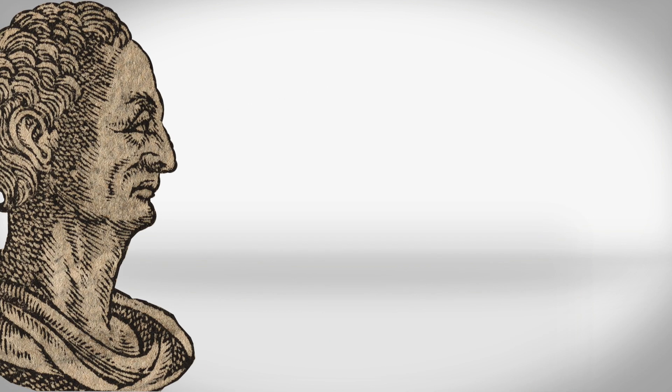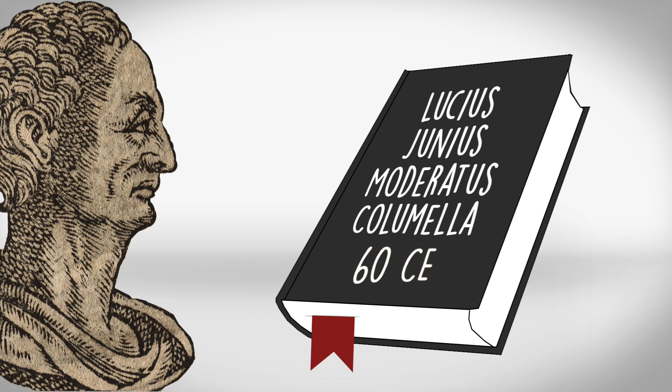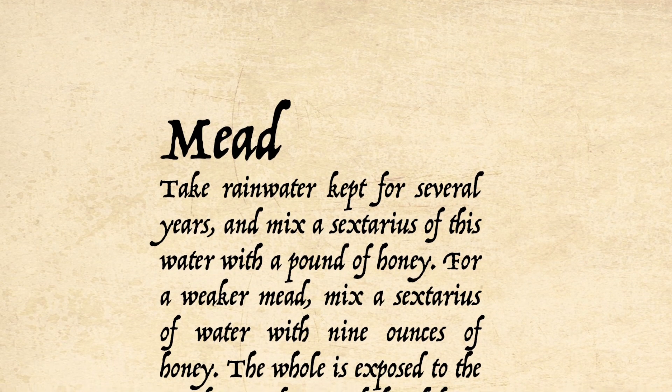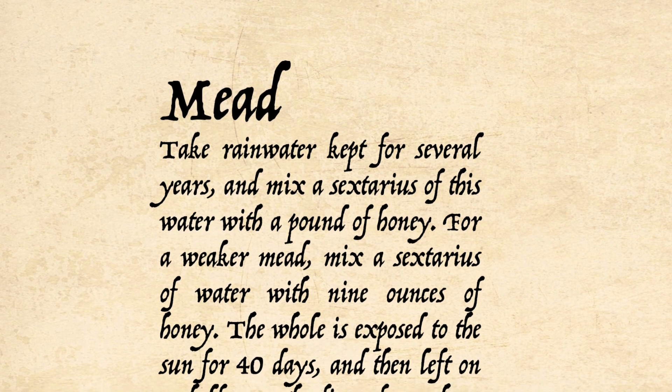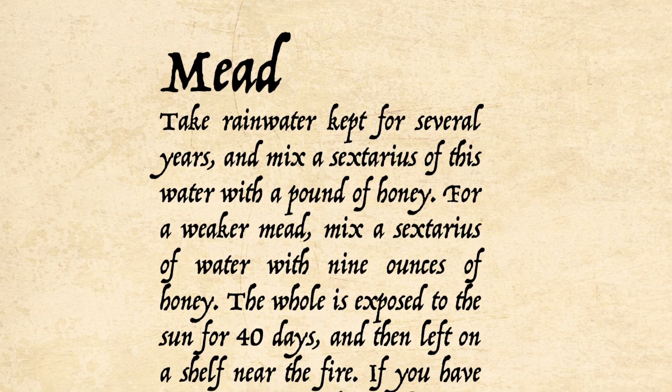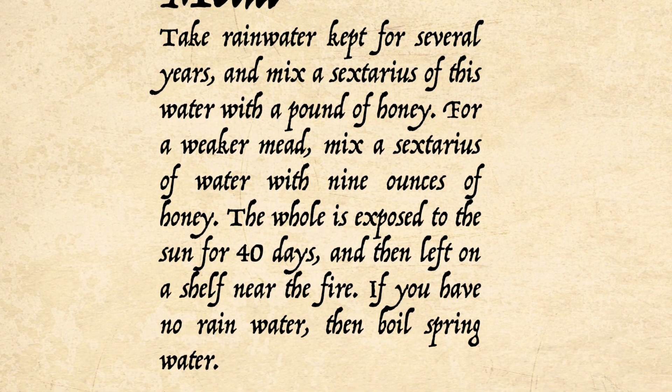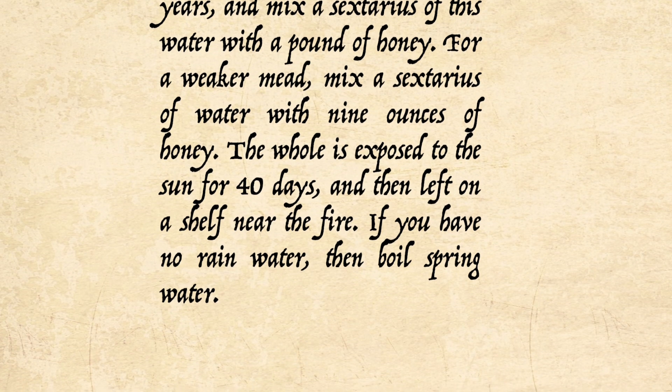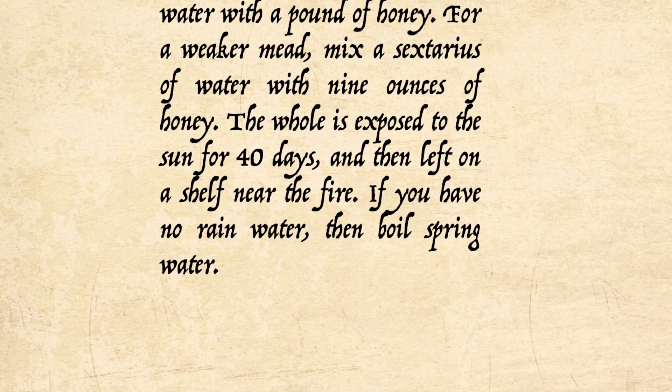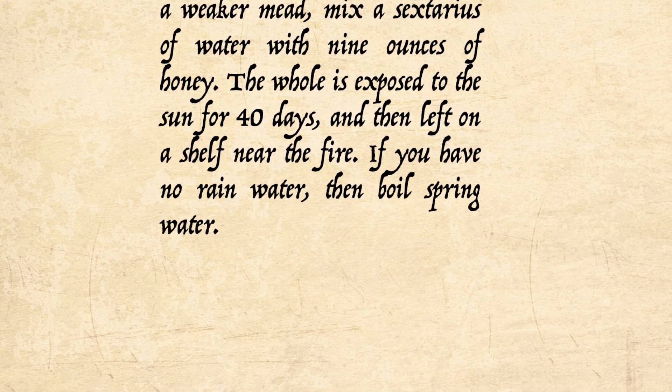The Hispanic Roman naturalist Columella gave a recipe for mead in his writings around the year 60 CE. Take rainwater kept for several years, and mix a sextarius of this water with a pound of honey. For a weaker mead, mix a sextarius of water with 9 ounces of honey. The whole is exposed to the sun for 40 days, and then left on a shelf near the fire. If you have no rainwater, then boil spring water.